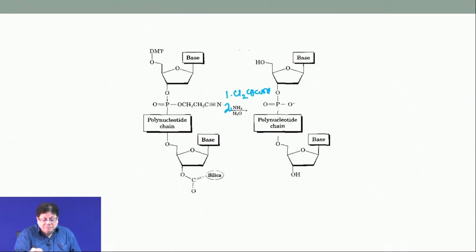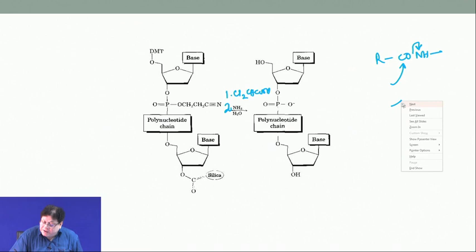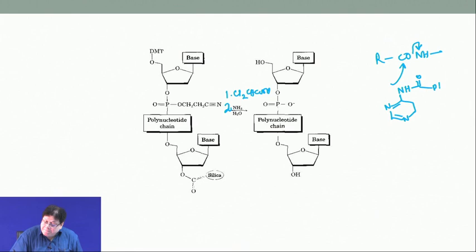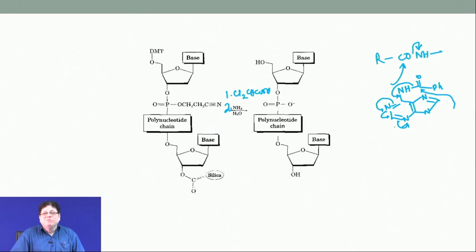Regarding the mechanism of base deprotection: we know that RCO-NH (acylated amines) can be removed by base. If you look at the structure of adenine, the benzoyl-protected amine is special — the resulting NH-minus leaving group is stabilized by the electron-withdrawing nitrogens of the purine ring. That is why the benzoyl groups can be taken off very easily — they are not as stable as typical aliphatic amides and can be deprotected readily.